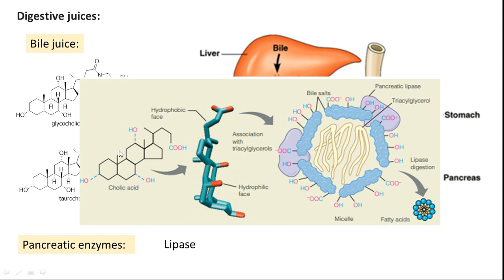Cholic acid helps form micelles, solubilizing triglycerides. Inside the micelle, triglycerides interact with the non-polar part of the cholic acid, while the polar part faces the outside. This facilitates attachment of the pancreatic lipase enzyme, acting as an interface between triglycerides and the enzyme. The enzyme slowly captures triglycerides, hydrolyzes them, and releases fatty acids into the small intestinal lumen, where they can be absorbed.